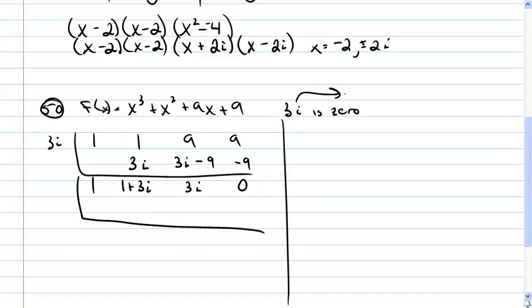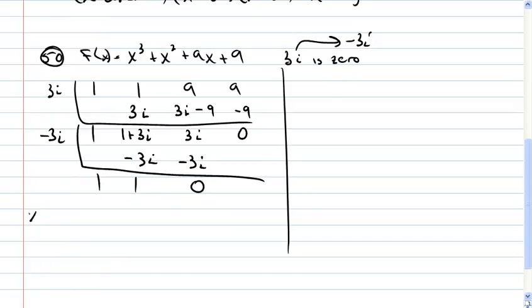If 3i is a 0, then so is negative 3i, because complex zeros appear in conjugate pairs. So I'm going to do the same thing. There, negative 3i. So bring down the 1, we have a negative 3i, leaving me with 1, negative 3i, 0. So what I'm left with, I have x minus 3i, x plus 3i, and then that's the remainder.